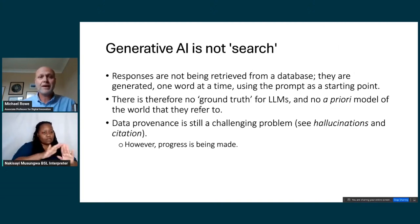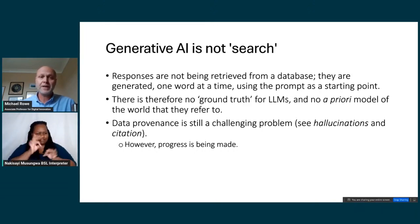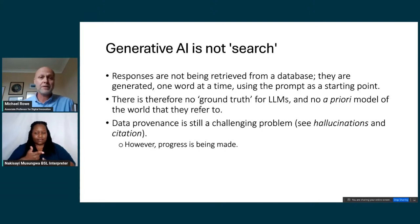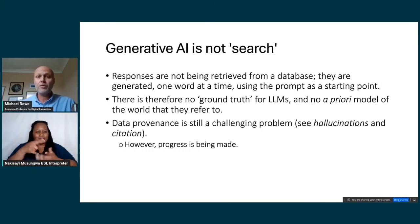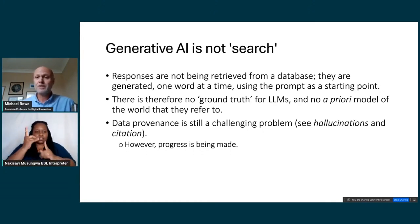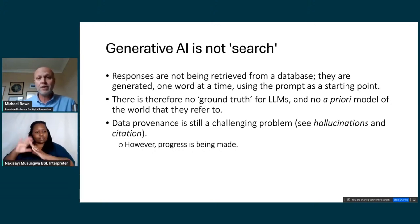There's a lot of confusion around what generative AI actually is. The responses from language models are not being retrieved from a database — they really are being generated one word at a time using the prompt as a starting point. For a vanilla frontier model without retrieval or documentation to compare against, there is no ground truth. There is no way for the model to determine the objective reality of the response it's giving you — so it doesn't know when it's making things up.